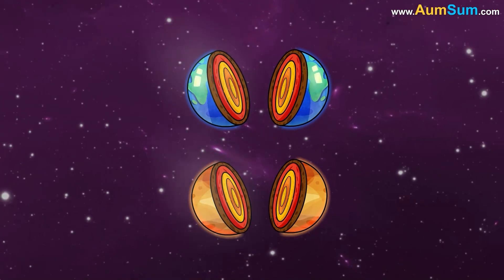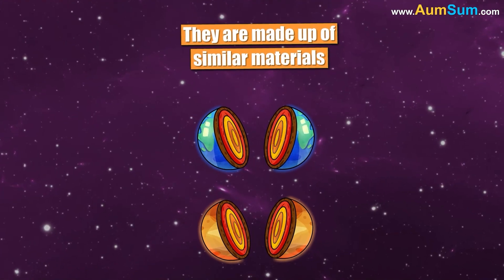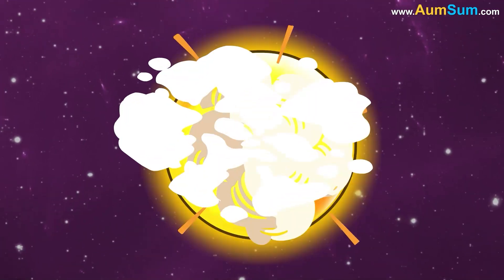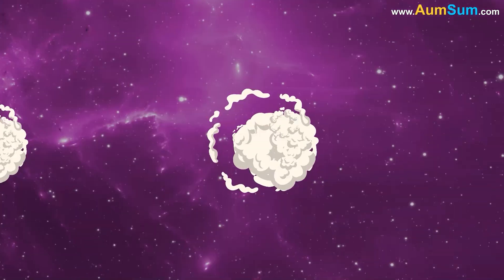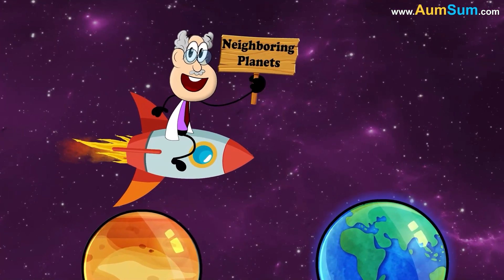Thirdly, Venus and Earth have a very similar composition, that is, they are made up of similar materials. Lastly, during the formation of the solar system, Venus and Earth formed close to each other and are now neighboring planets.